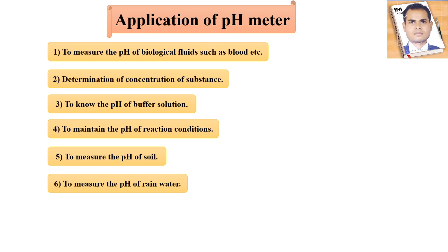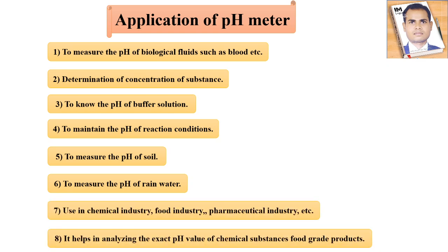The pH meter is also used in chemical laboratories, the food industry, and the pharmaceutical industry. It helps in analyzing the exact pH value of chemical substances and food grade products. Different food materials we eat — such as biscuits or noodles — should have a proper pH, and we have to measure that with the pH meter.